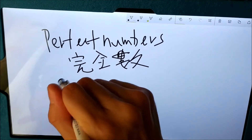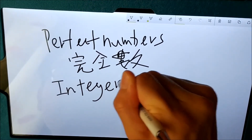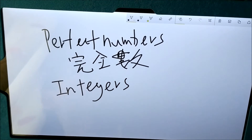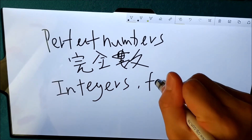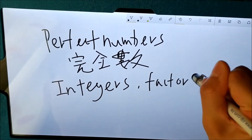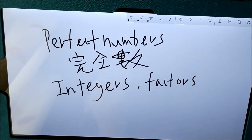For example, do you still remember what's the meaning of integers? If you still remember what's the meaning of integers, do you still remember what's the meaning of factors? So I give you 5 seconds to recall. 5, 4, 3, 2, 1. Okay, so now we can go to learn about what's the meaning of perfect numbers.